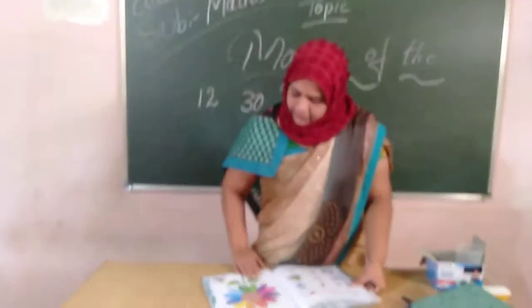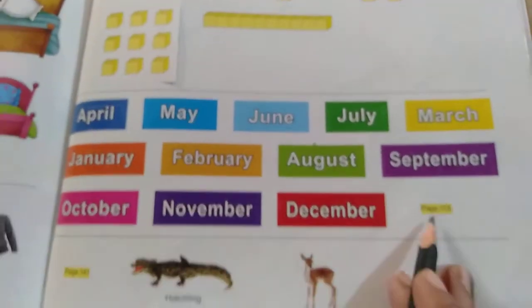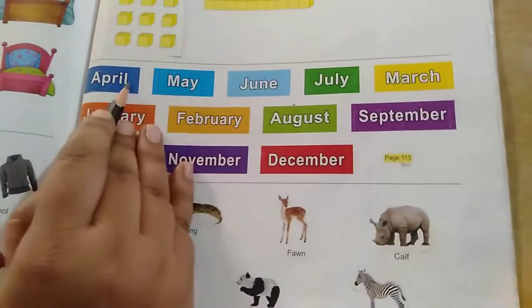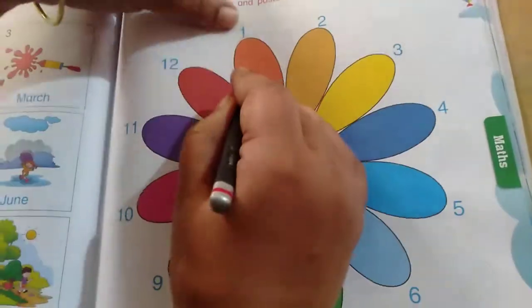Here it is given month's names. Here is the sticker activity. Page number 113. Here is the sticker. Look at each number and place the stickers for the months. Stickers are given in the back side of your book. Page number 113. Remove the month's name sticker and stick it here properly.